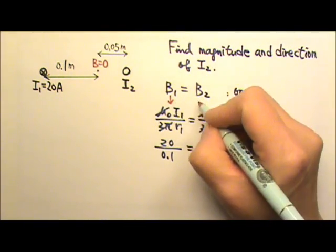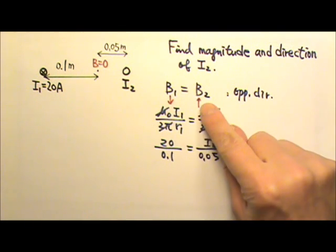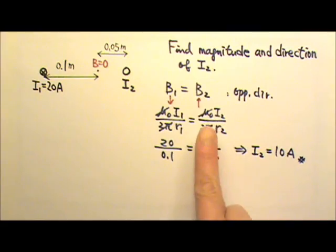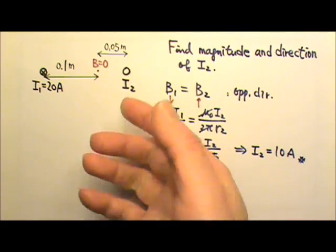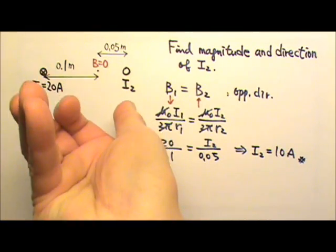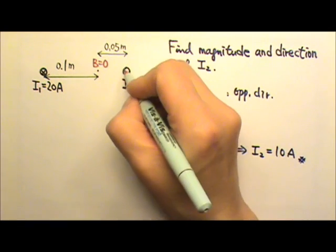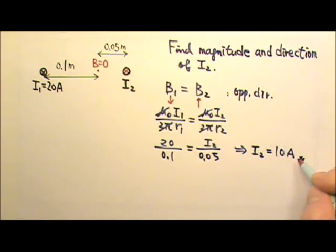That means we need B2 to go up that way, which means if I use my thumb to follow the current, the curved four fingers should go that way over here. So my curved four fingers have to go that way, and that means my thumb has to go into the paper. So I2 must go into the paper as well.